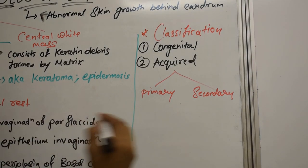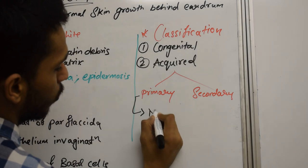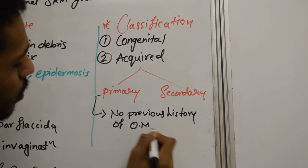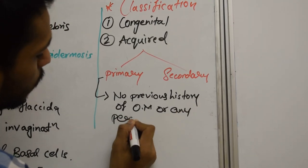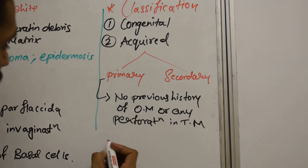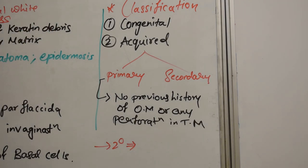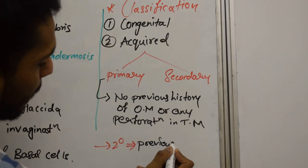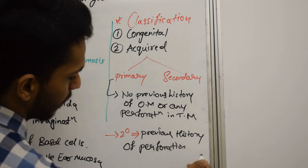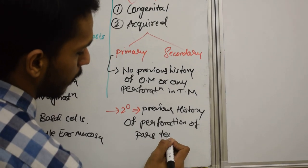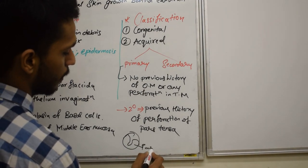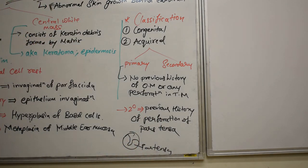What is the difference between primary and secondary? In primary Cholesteatoma, there is no previous history of otitis media, or any perforation in the tympanic membrane. Whereas in secondary Cholesteatoma, there is a previous history of perforation of the pars tensa, which is the lower part of the tympanic membrane.